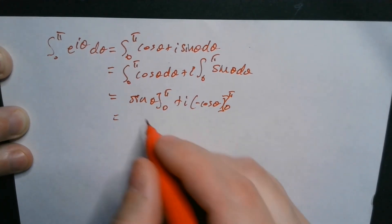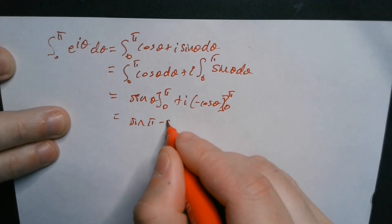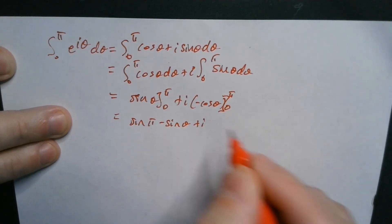Okay, maybe add a bar here if you want. So then you plug in, you're going to have sine of pi minus sine of 0 plus i.